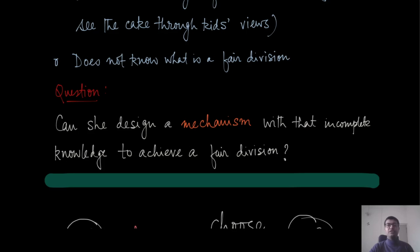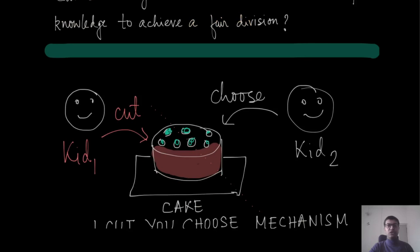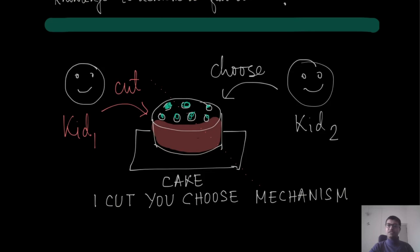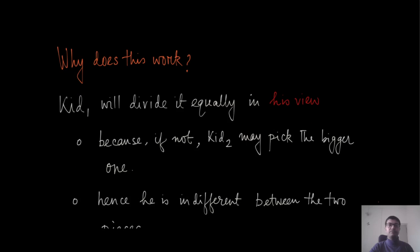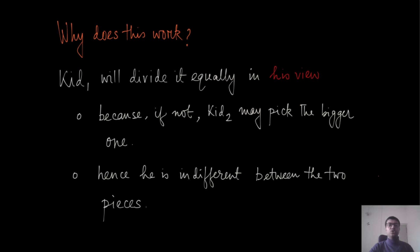This problem occurs in various other contexts involving division of any kind of resources, and it turns out this is an age-old problem with an age-old solution. Let us call this solution the 'I cut, you choose' mechanism. The mother says: kid one, you can cut this cake, and then kid two will choose her favorite piece. That mechanism is that simple. Can it really achieve fair division? The answer is yes.